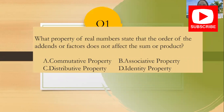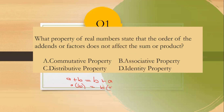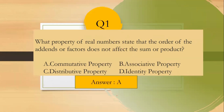Question number one: What property of real numbers states that the order of the addends or factors does not affect the sum or product? The choices are: A) commutative property, B) associative property, C) distributive property, D) identity property. The commutative property states that a plus b equals b plus a, or a times b equals b times a — the order does not affect the sum or product. The answer is letter A, commutative property.